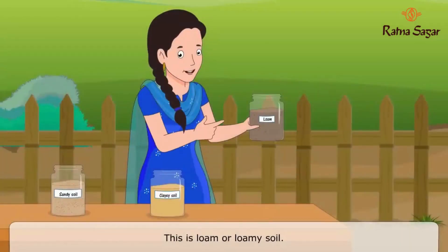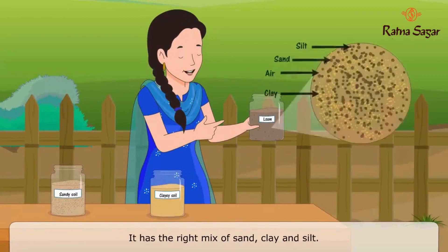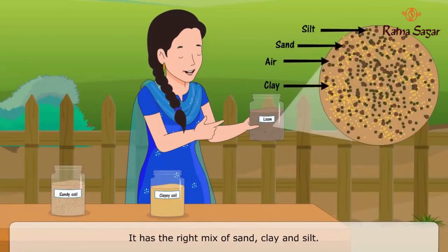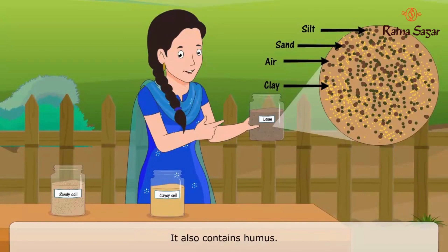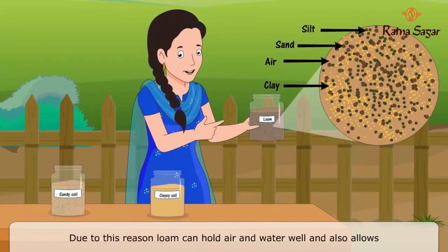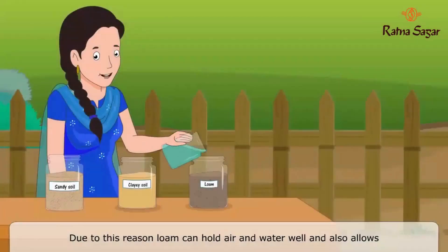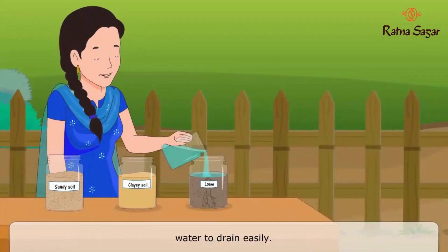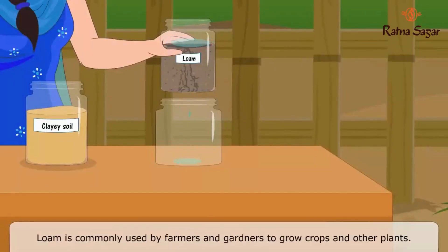This is loam, or loamy soil. It has the right mix of sand, clay, and silt, and it also contains humus. Due to this reason, loam can hold air and water well and also allows water to drain easily. Loam is commonly used by farmers and gardeners to grow crops and other plants.